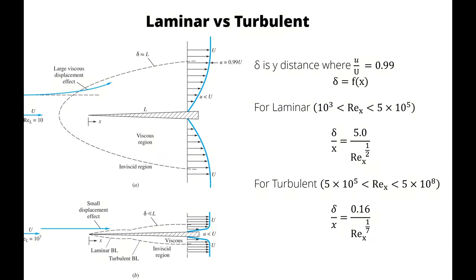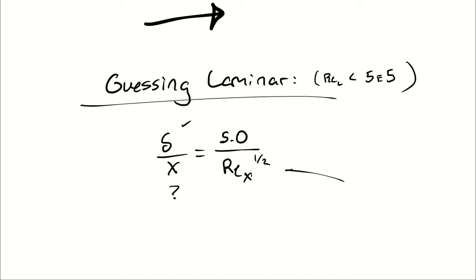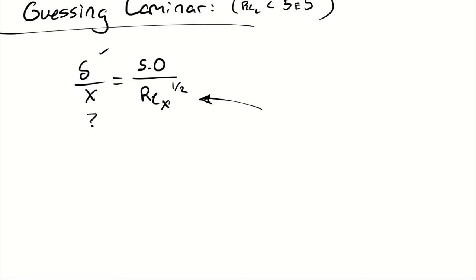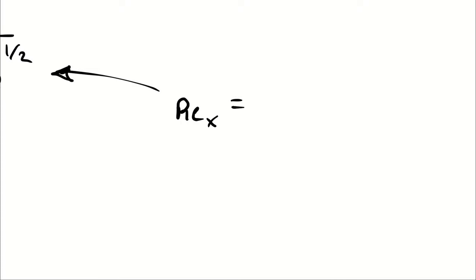For laminar flow, our equation is delta over x equals 5 divided by the Reynolds number to the one-half power. Delta is known, x is what we're solving for, and the Reynolds number at that position is the Reynolds number where x is the characteristic length. So we're using velocity times length divided by the kinematic viscosity.